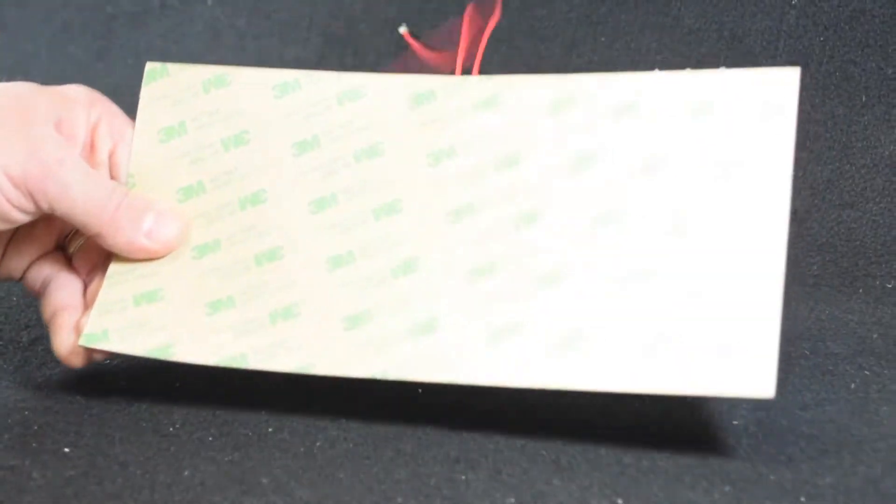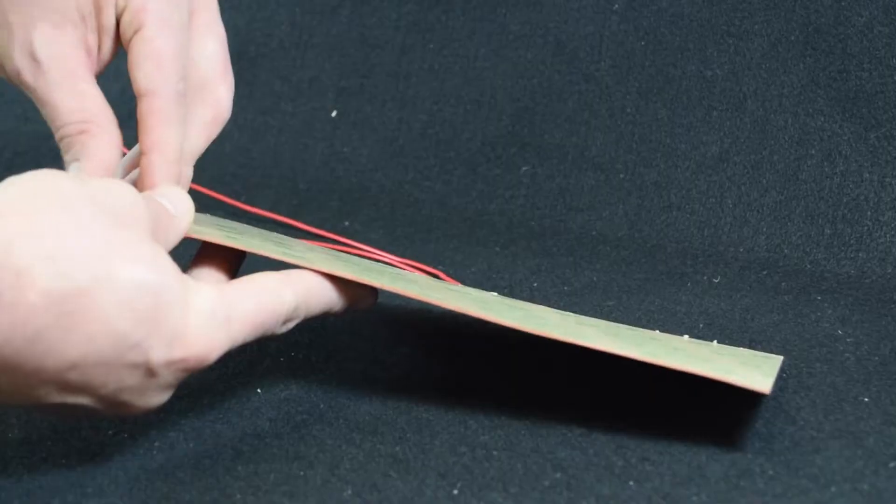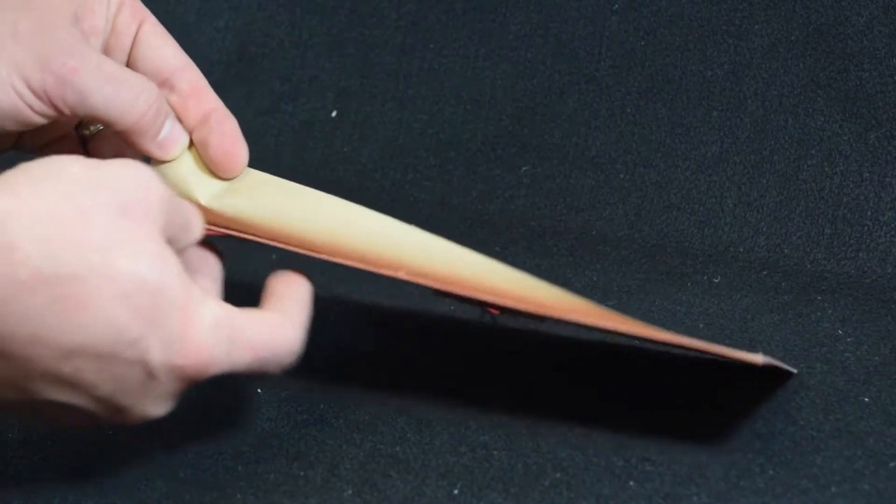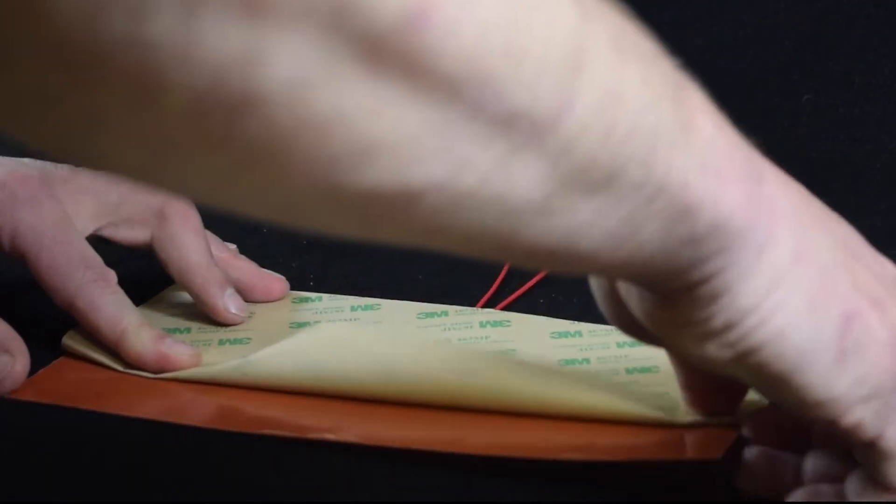Peel the release liner from the farthest edge or corner away from the lead connections. The peel back release liner should be approximately 2 inches or 50 millimeters and folded back upon itself.